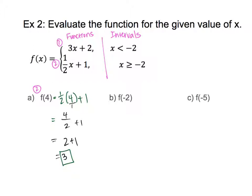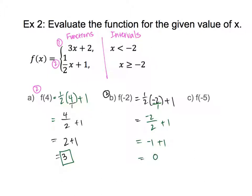For part B, x is negative 2. The second interval says x can be equal to negative 2 (greater than or equal to), so I use the second equation. Setting it up: one half times negative 2 plus 1. Multiplying: 1 times negative 2 over 2 times 1 is negative 2 over 2, which is negative 1, plus 1 equals 0. My output is 0.